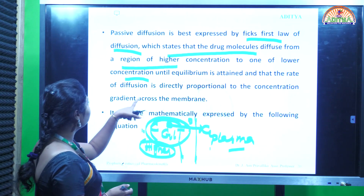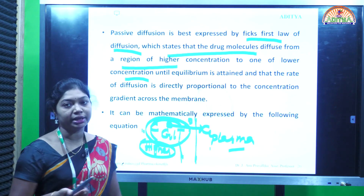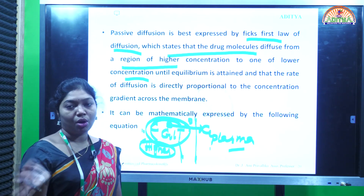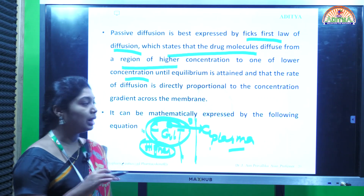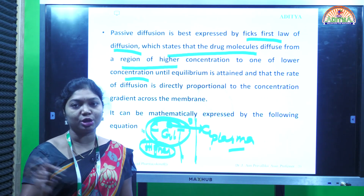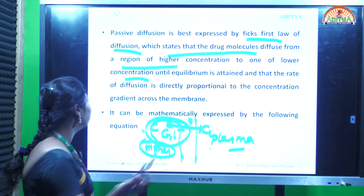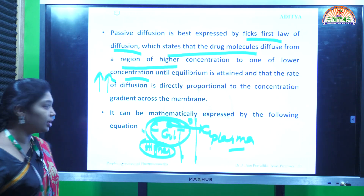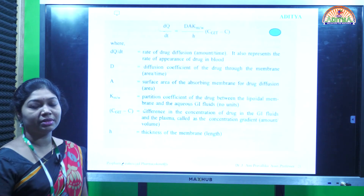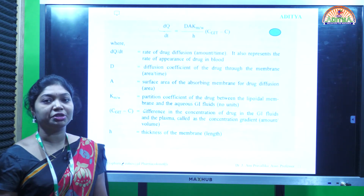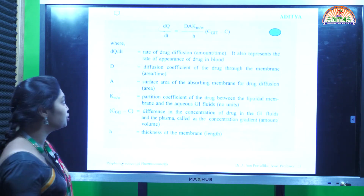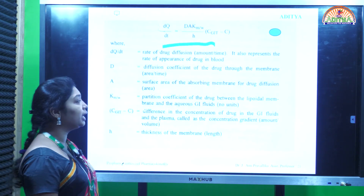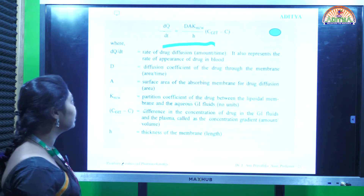The rate of diffusion is directly proportional to the concentration gradient across the membrane. If there is a greater difference in concentration on either side of the membrane, the rapidity of absorption will increase - a higher concentration difference means a higher absorption rate. Passive diffusion is best expressed mathematically by the equation: dq/dt = D·A·Km/W/H × (C-GIT minus C).